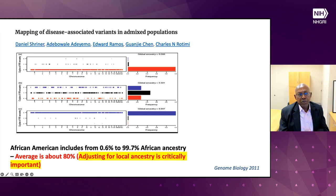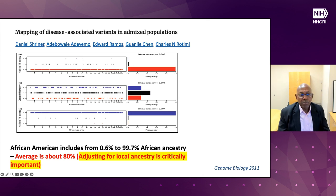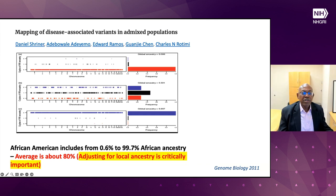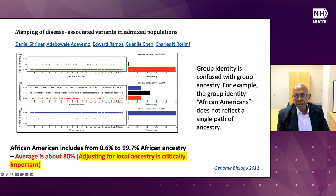In African-Americans, we showed very clearly that individuals can have very different ancestral backgrounds — everyone labeled as African-American ranges from 0.6% to almost 100% African ancestry, with an average of about 80%. You can see how using the average can be very disruptive.